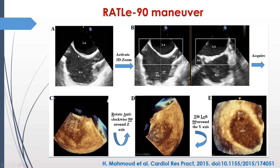Starting from the simple bicaval view that everybody knows — which is around 90 degrees, mid-esophageal view — we will have the left atrium, right atrium, superior vena cava, and inferior vena cava. Starting with this view, we will activate the 3D zoom mode on the machine. Once you activate 3D zoom, the screen will be divided into two small screens. The left-hand image will be your reference image — the bicaval view — and the right-hand image will be the elevation plane, showing you the anterior and posterior image.